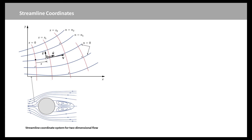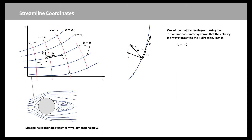The flow plane is covered by an orthogonal curved net of coordinate lines. At any point, the S and N directions are perpendicular, but the lines of constant S or constant N are not necessarily straight without knowing the actual velocity field. Hence, without knowing the streamlines, it is not possible to construct this flow net. One of the major advantages of using the streamline coordinate system is that the velocity is always tangent to the S-direction, as given by this equation. For two-dimensional flow, we can determine the acceleration as this equation, where As and An are the streamline and normal components of acceleration respectively.